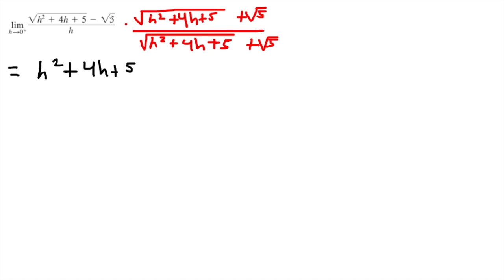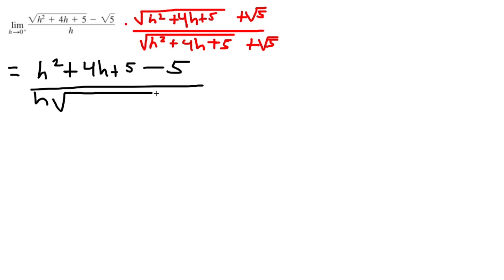Applying the conjugate: the square root of h squared plus 4h plus 5 squared gives us h squared plus 4h plus 5. The square root of 5 times the square root of 5 gives us 5, and since it's negative over here, it becomes negative 5. The denominator is h times the quantity square root of h squared plus 4h plus 5, plus the square root of 5.